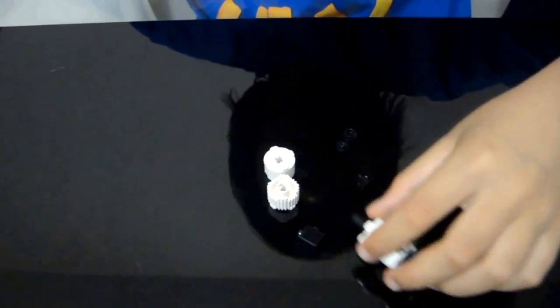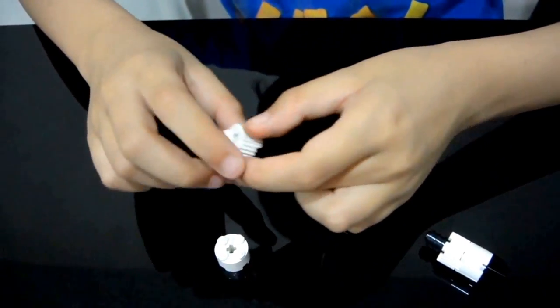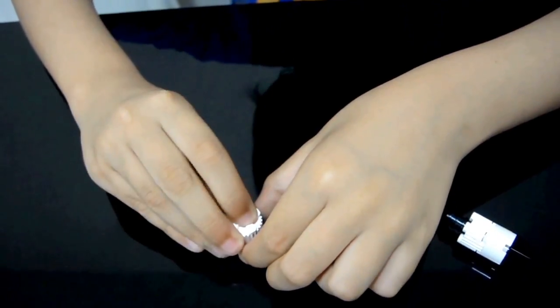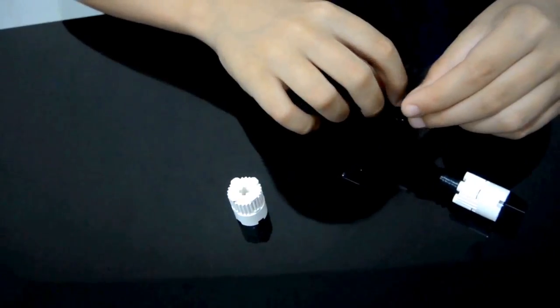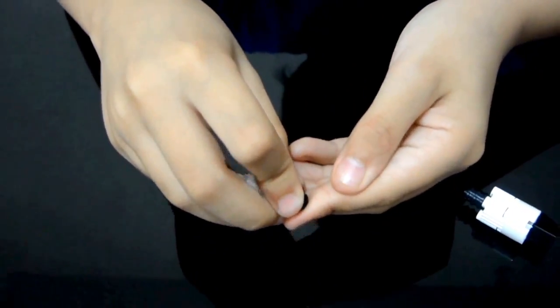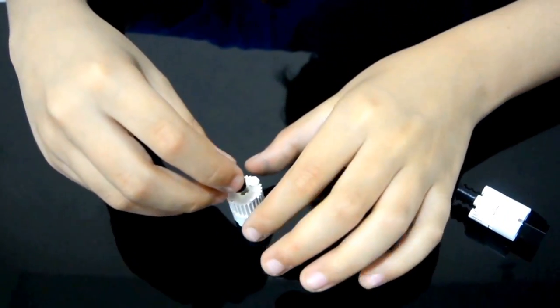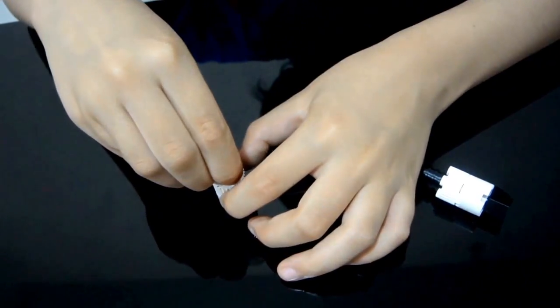For the arms, get two 2x2 round pieces. Stack these on top of each other and stack up three black studs. Place these in between here.